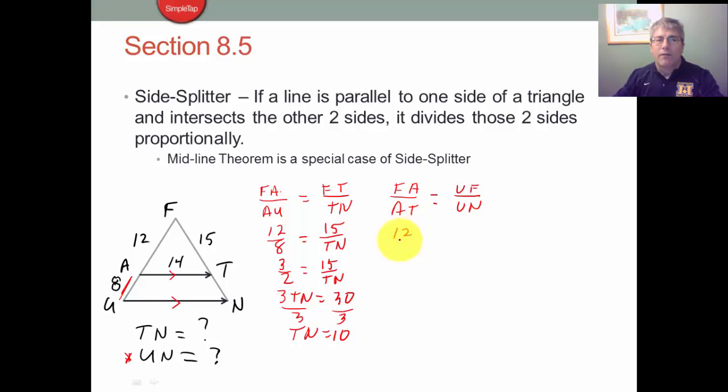So 12 is to 14 as UF, which is 12 plus 8, so as 20 is to UN. So we could reduce that to 6 is to 7 as 20 is to UN.